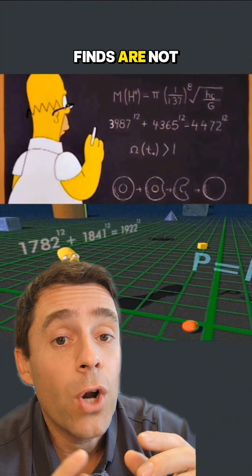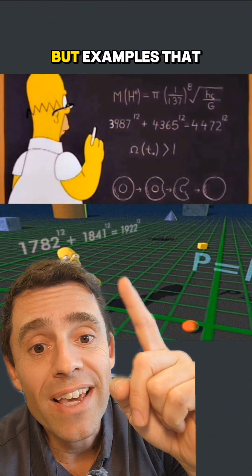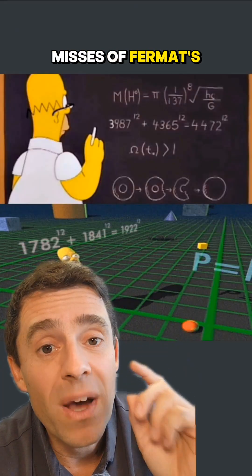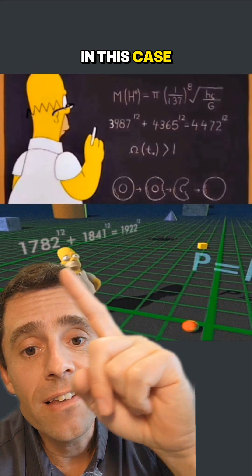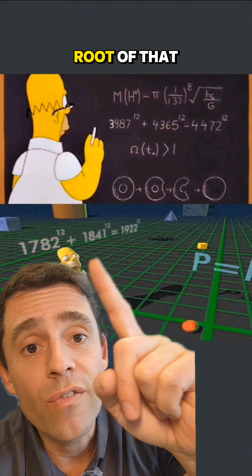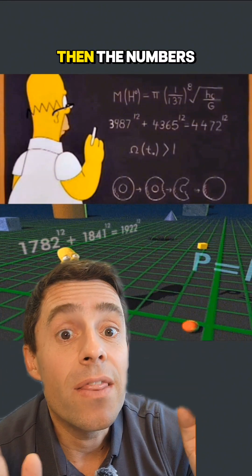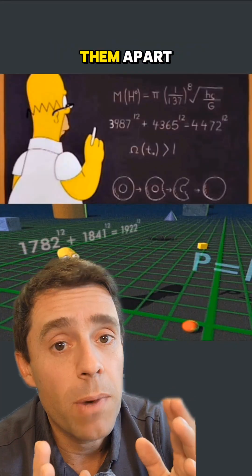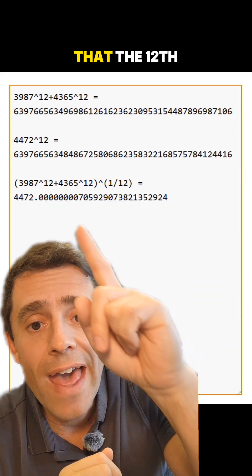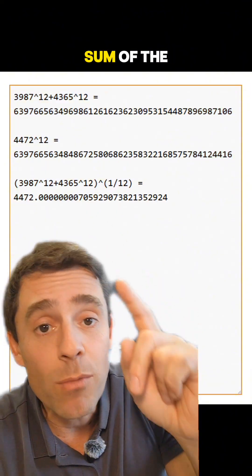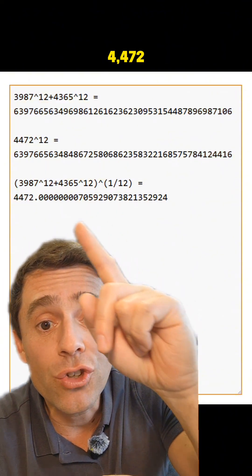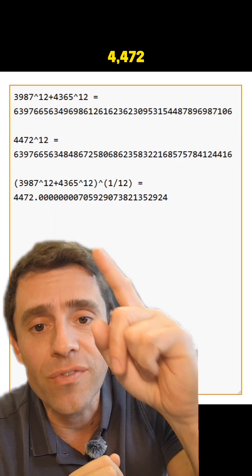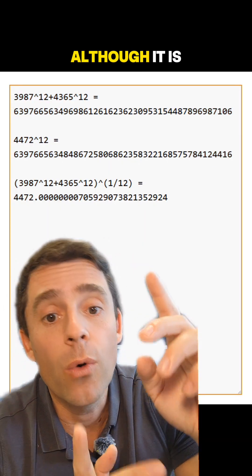So what Homer finds are not examples that do not exist, but examples that are almost right. They are near misses of Fermat's last theorem in the sense, in this case, that if you take a twelfth root of that number and a twelfth root of that number, then the numbers are so close that a regular calculator cannot tell them apart. You can see with a good calculator that the twelfth root of the sum of the twelfth powers is 4,472 to enough precision that a regular calculator would say it is exactly 4,472, although it is not.